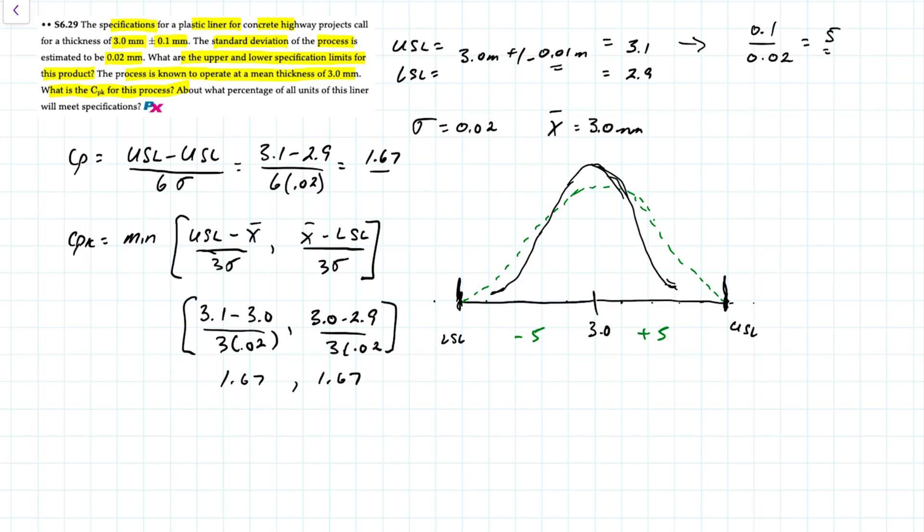Because we are between plus five and minus five standard deviations, this is very close to six sigma quality. Six sigma is six standard deviations on each side. In terms of the percentage of all the units that meet specifications, a very high proportion of the products will meet specifications, close to 100 percent with a very small defect ratio.